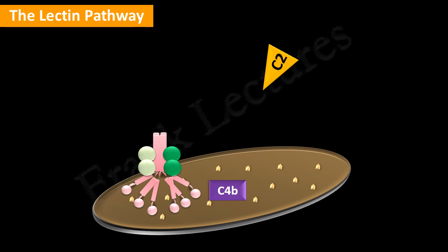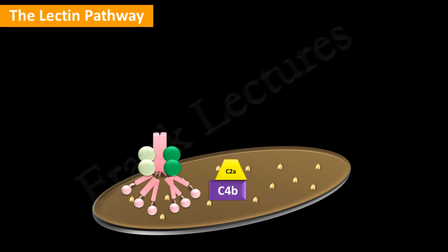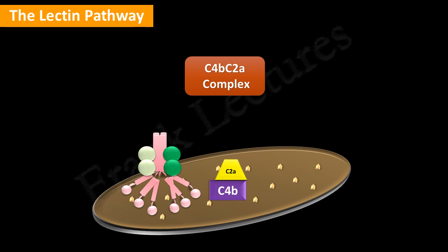In the next step, complement protein C2 comes and interacts with MASP2 and gets cleaved into C2A, which is the larger fragment, and smaller C2B. The C2A larger fragment binds to the pathogen-bound C4B. The resulting complex of C4B and C2A is designated as the C4B-C2A complex, and this is a C3 convertase.